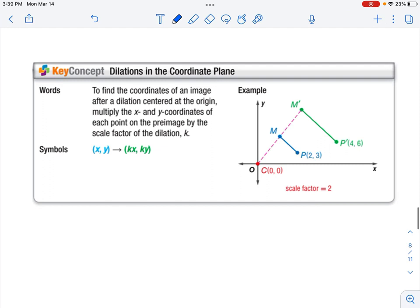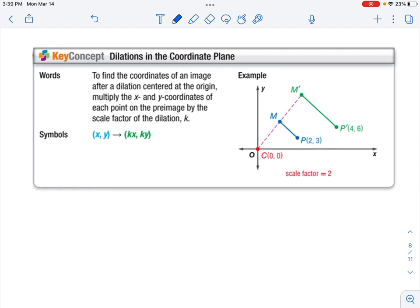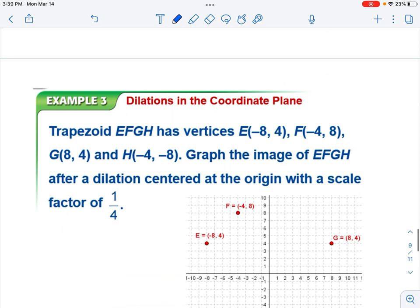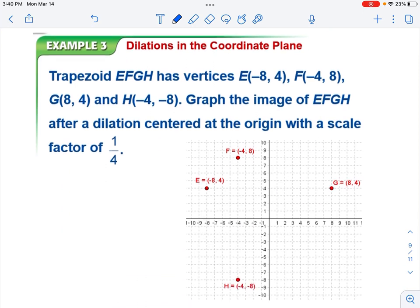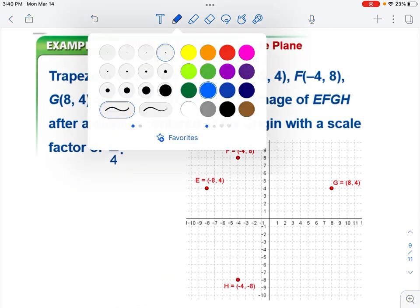Okay? And then once we get to the coordinate plane dilations, I would say these are the easiest versions, because they'll give you a scale factor, and all you do is multiply the x and y of the coordinate by the scale factor. So in this case, P was 2, 3. We multiply both x and y to get P prime, which is 4, 6. So if we do an example, I want you to go ahead and write your coordinates out.